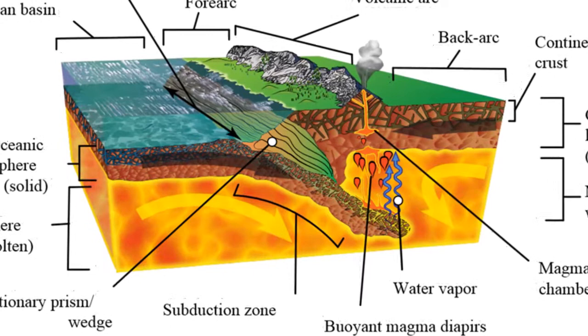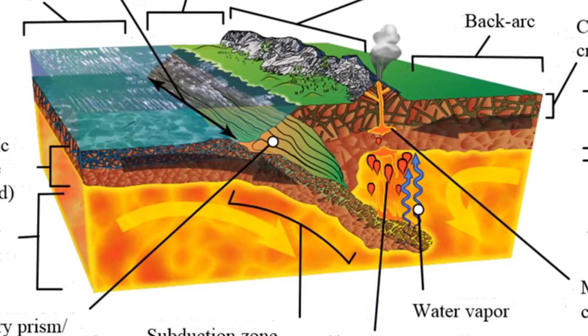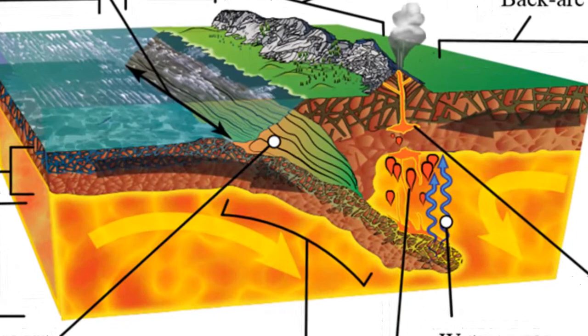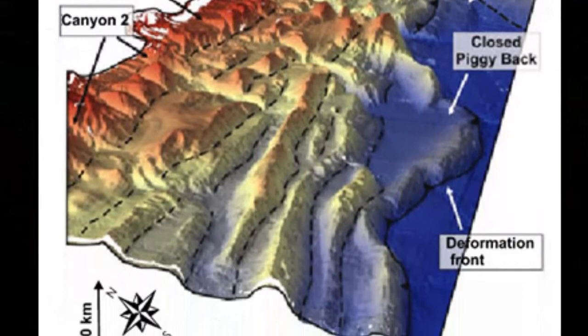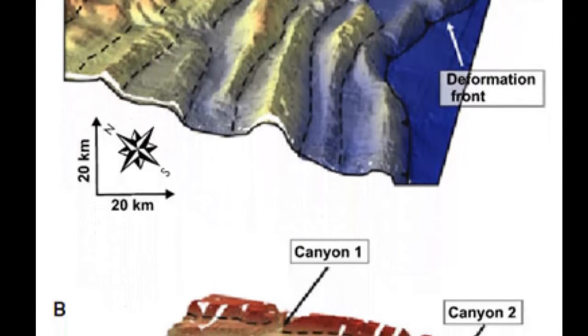By contrast, the Cascadia subduction zone has a large accretionary wedge. Here, the Juan de Fuca Plate has a 3 km (2 mile) thick mantle of sediments, contributed mainly by the Columbia River. Prolonged subduction in regions where sediment is plentiful may thicken an accretionary wedge enough so it protrudes above sea level. This has occurred along the southern end of the Puerto Rico Trench, where the Orinoco River Basin of Venezuela is a major source region. The resulting wedge emerges to form the island of Barbados.